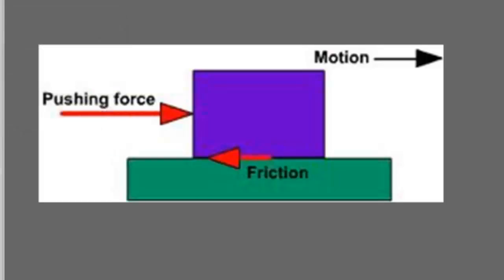Take a look at this purple box to see how friction works. The pushing force is the motion of the box — I'd be pushing the box towards the right-hand side of the screen — but the frictional force is going to oppose that motion. The frictional force will occur where the two surfaces come together, so that's at the bottom of the box and at the top of the table.